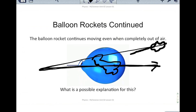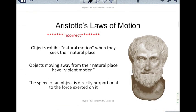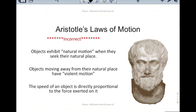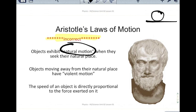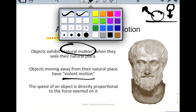Before we get into Newton's laws of motion, we want to look at what came before Newton — that was Aristotle's laws of motion. It's really important that you realize Aristotle's laws of motion are in fact incorrect. What Aristotle said was that every object seeks its natural place — a rock belongs on the ground, so if you take the rock and put it above the ground, it will move toward its natural place. There was a way to move the rock away from the ground, but you had to exert something called violent motion — removing something from its natural place.